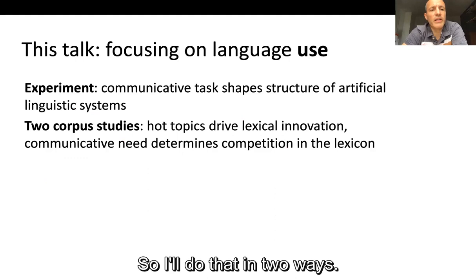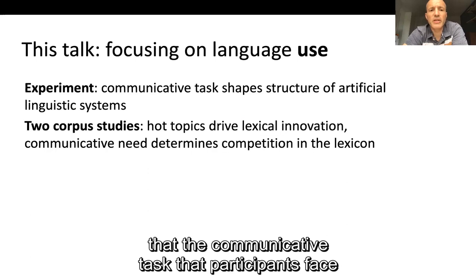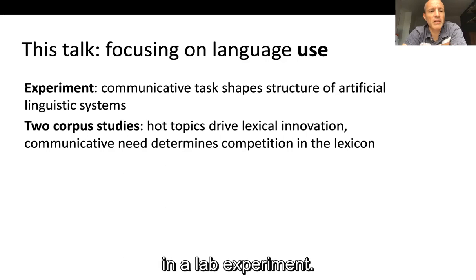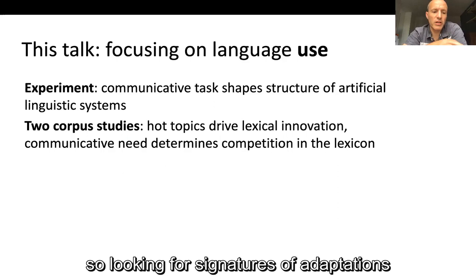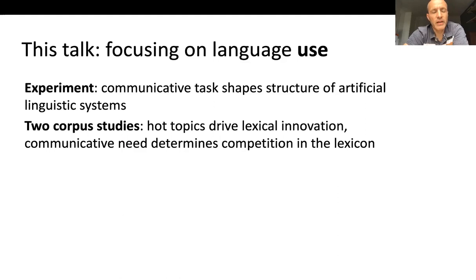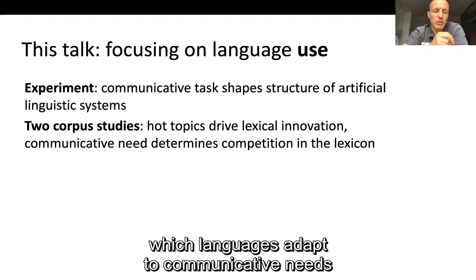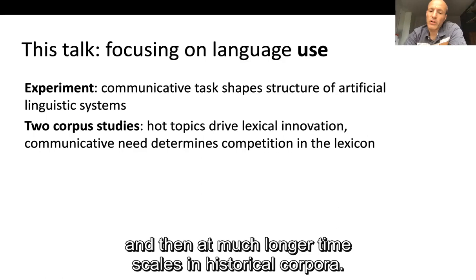I'll do that in two ways. I'll present an experiment showing that the communicative task participants face shapes the structure of artificial linguistic systems in a lab experiment, and then I'll show two corpus studies trying to show the same thing — looking for signatures of adaptation to communicative need in historical corpora. By using these two techniques, we can investigate language adaptation to communicative needs at very short timescales in the lab, and then at much longer timescales in historical corpora.